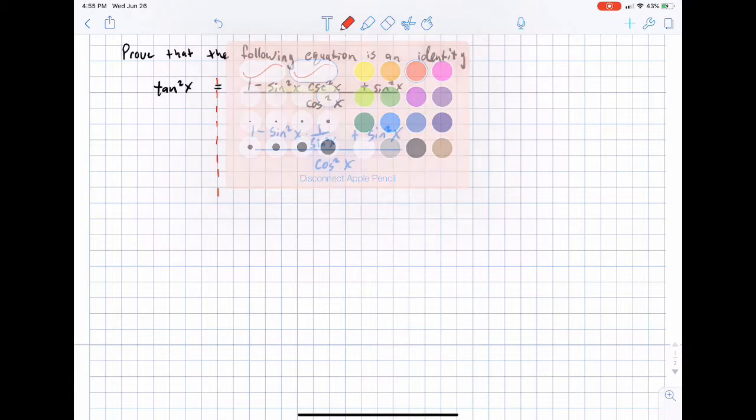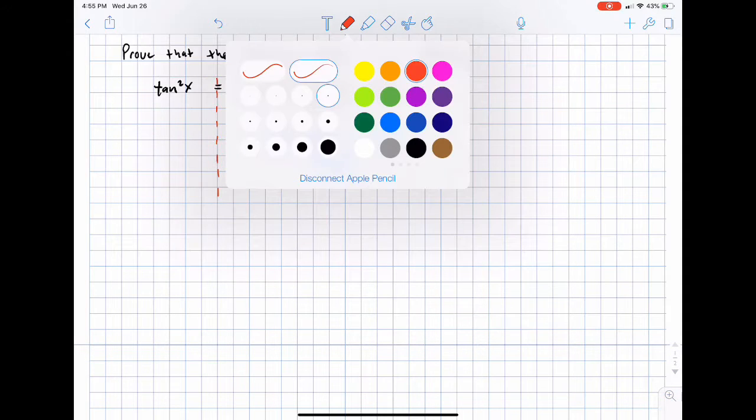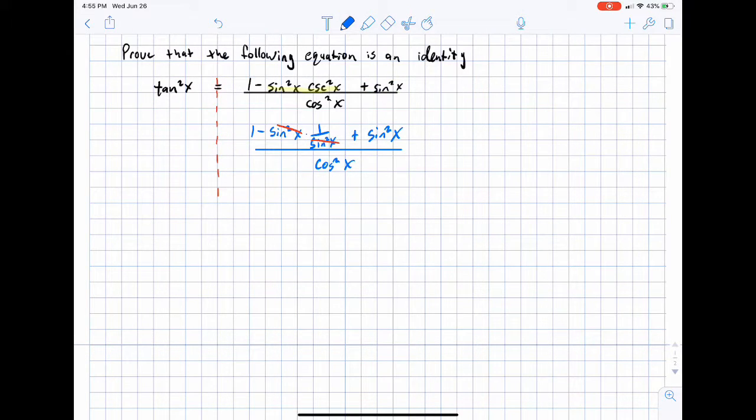Now, I can simplify that fraction. This sine squared of x will cancel out with that sine squared of x that's in the denominator. And we end up with one minus one plus the sine squared of x all over the cosine squared of x. Well, one minus one is zero, so I'm left with just sine squared of x over the cosine squared of x.